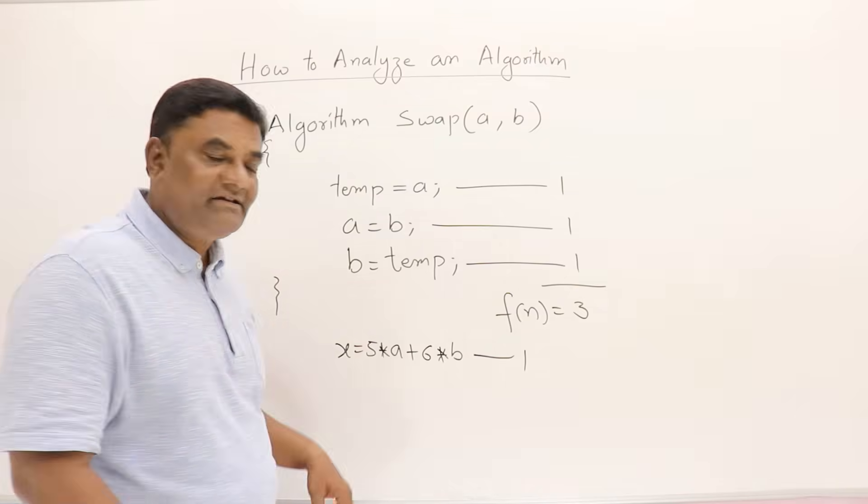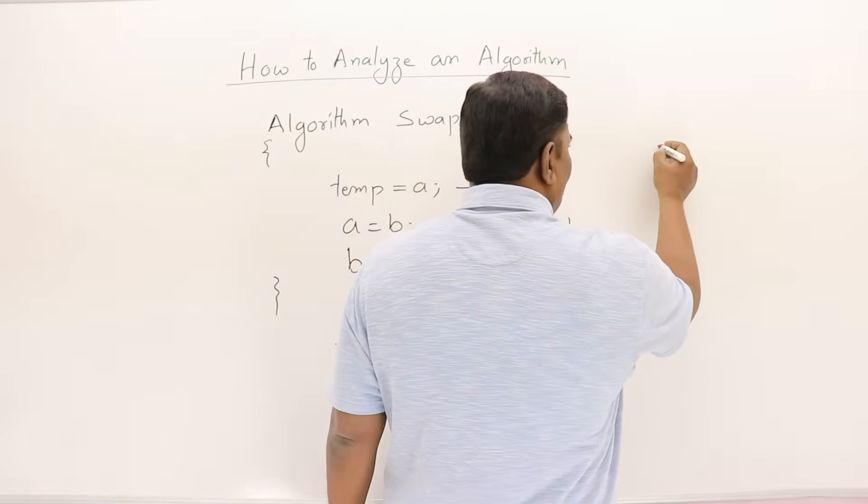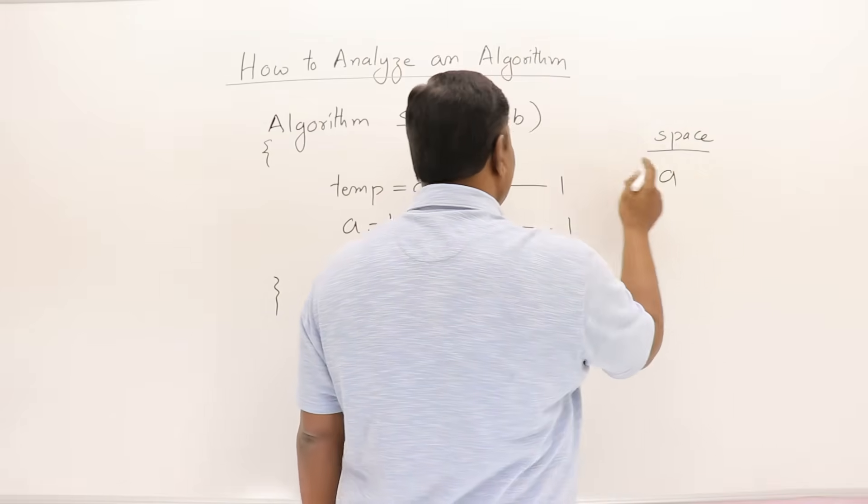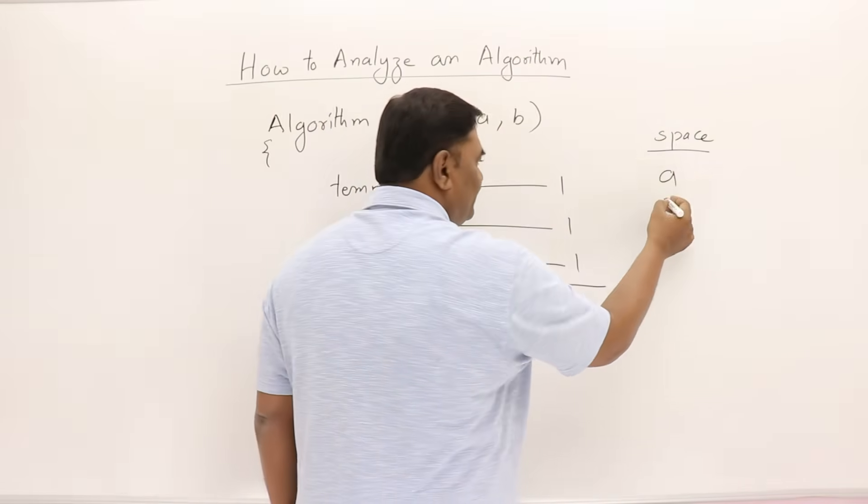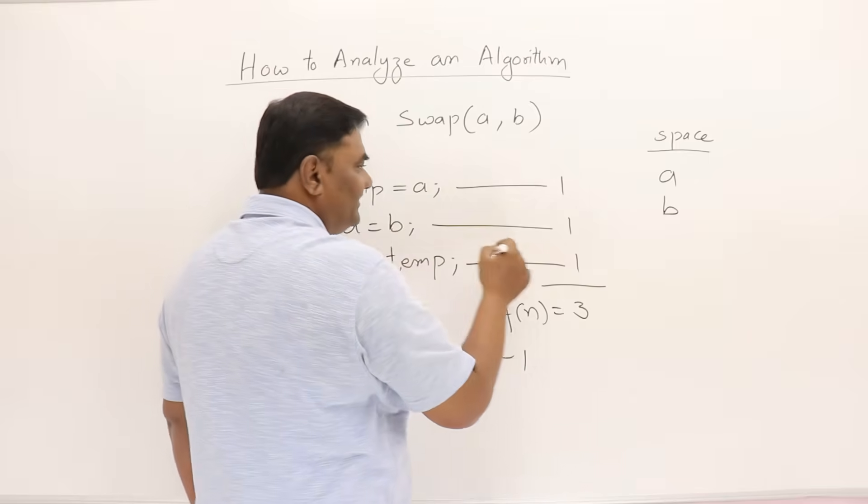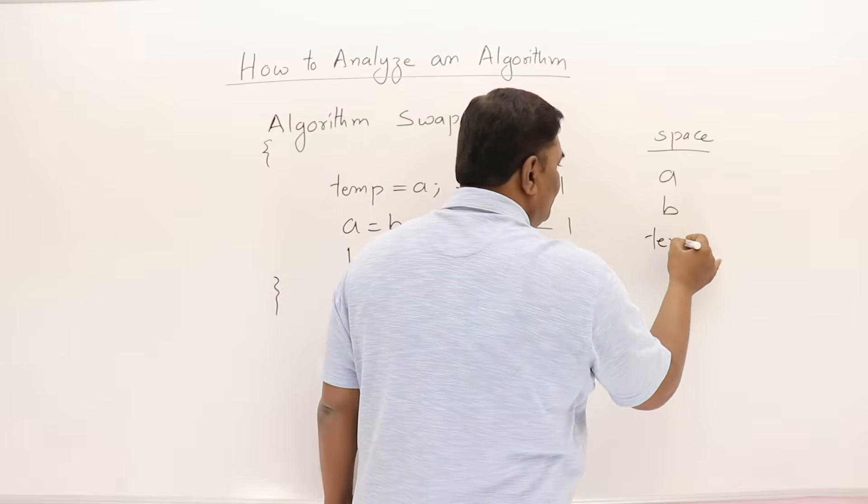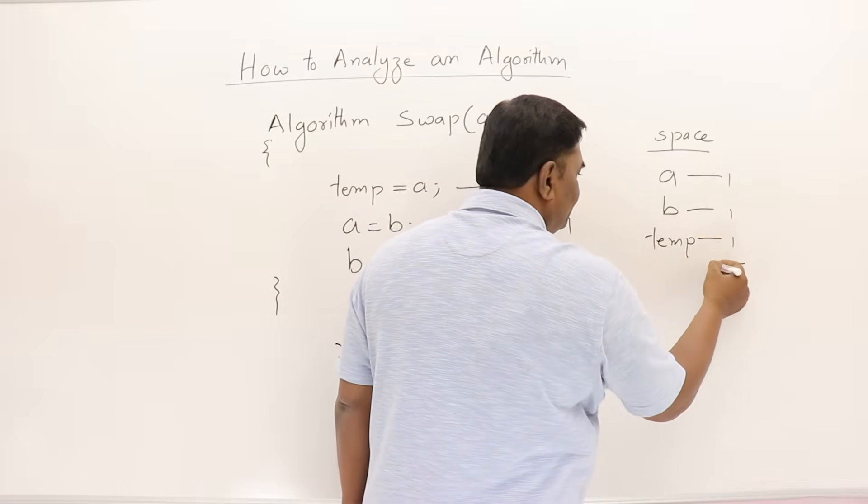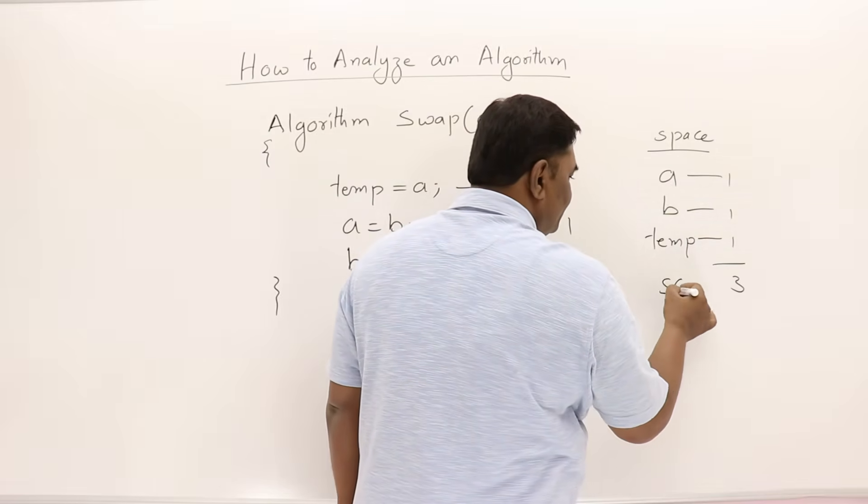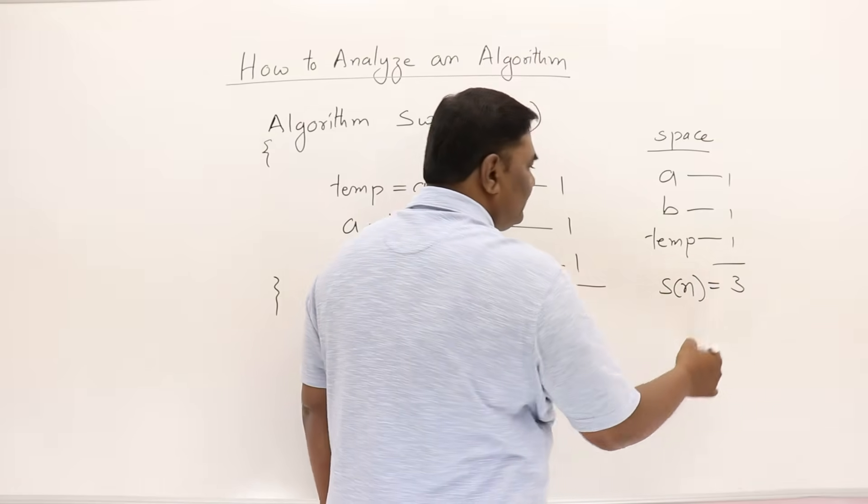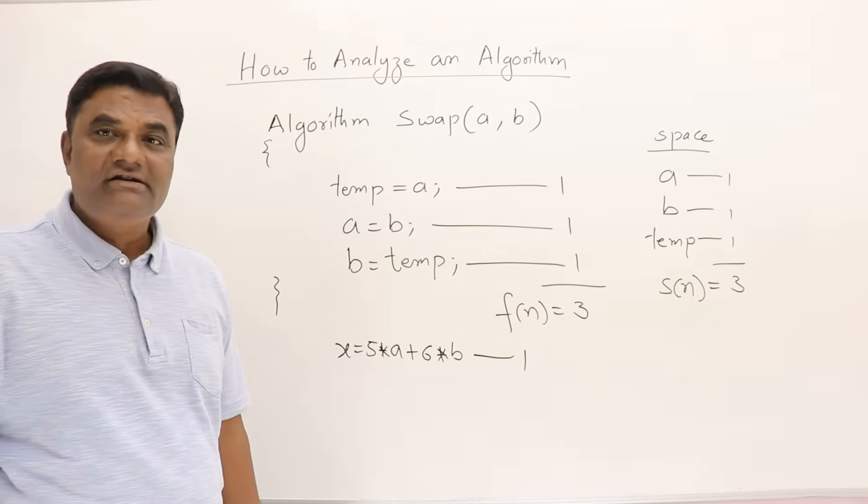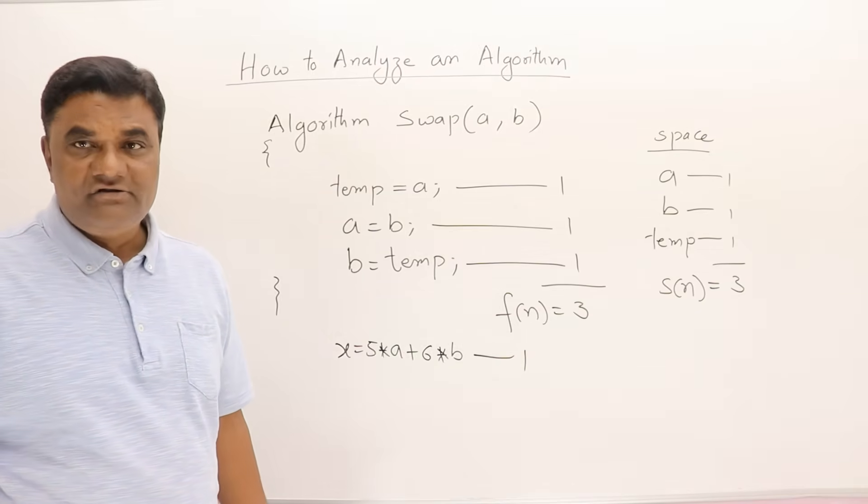Next is space analysis. What are the variables used here? For space, I will write down the variables. A is one parameter, B is also a parameter, and temp is the local variable used. So total how many variables? 1, 2, and 3. So there are 3 variables used. So the space is constant again. It is just 3. I got the answer as 3. So again it is also constant.